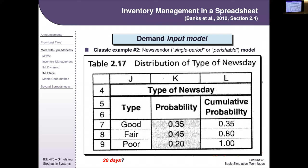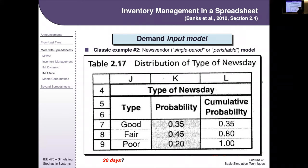We can build a spreadsheet for the news vendor problem. The only input is demand — no lead time to worry about. The demand input model categorizes each day as good, fair, or poor: most days are fair, some are good, and a rare few are bad. We define demand quantities for each category and draw randomly from this distribution each simulated day.